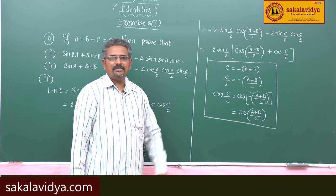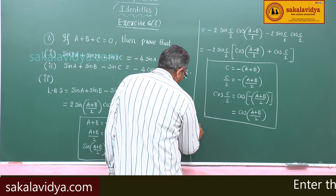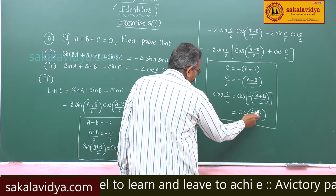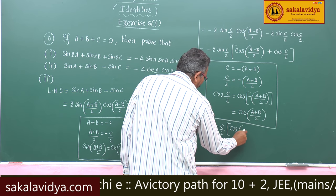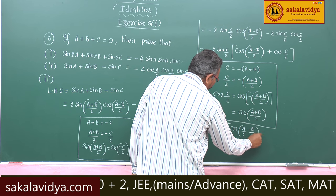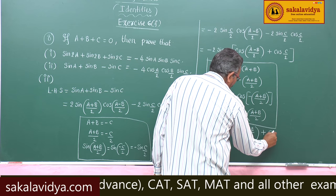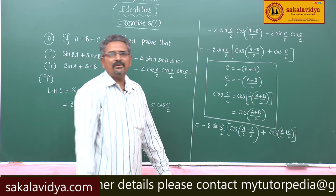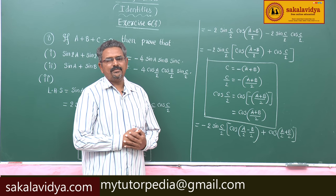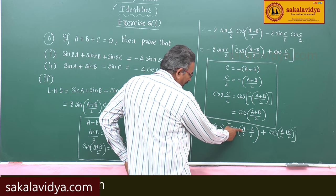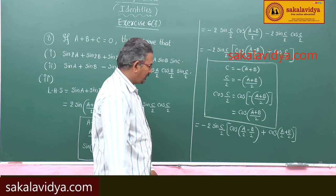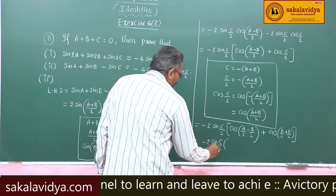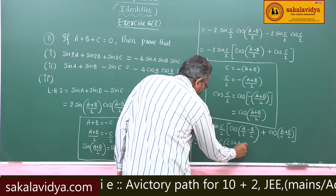Replacing cos(C/2) with cos((A+B)/2), the bracket becomes cos((A-B)/2) + cos((A+B)/2). This is in the form cos(A-B) + cos(A+B) = 2cosA cosB, so with A→(A/2) and B→(B/2), it equals 2 cos(A/2) cos(B/2). The full expression becomes -2 sin(C/2) · 2 cos(A/2) cos(B/2).